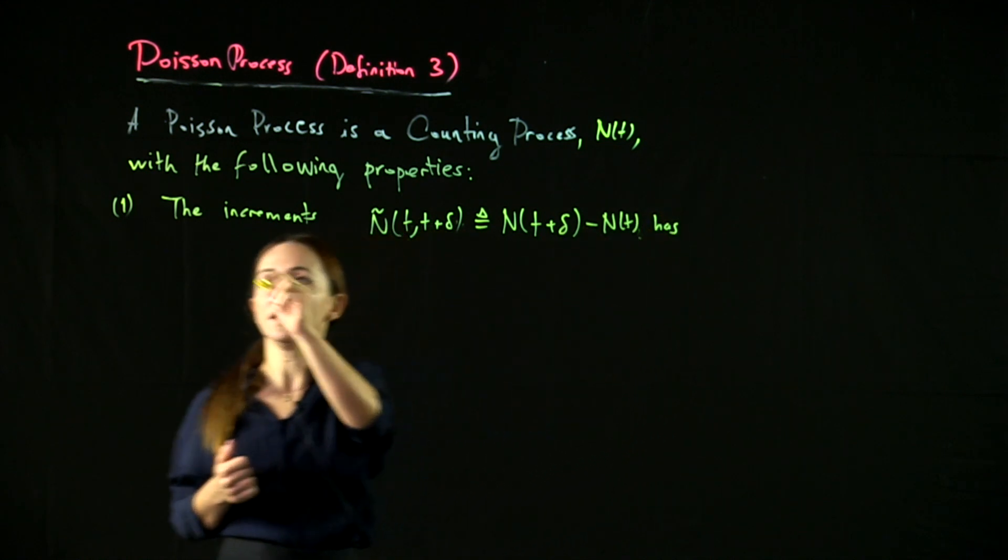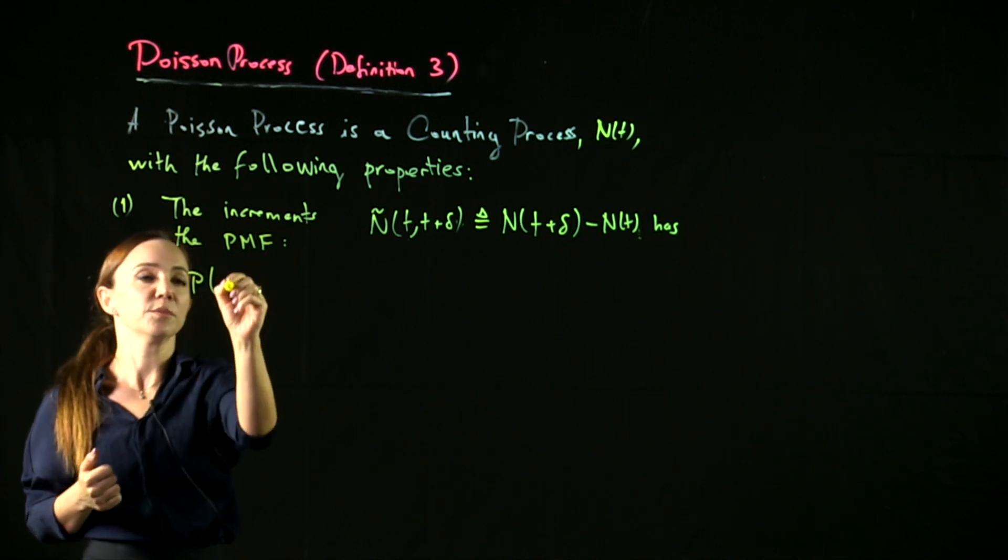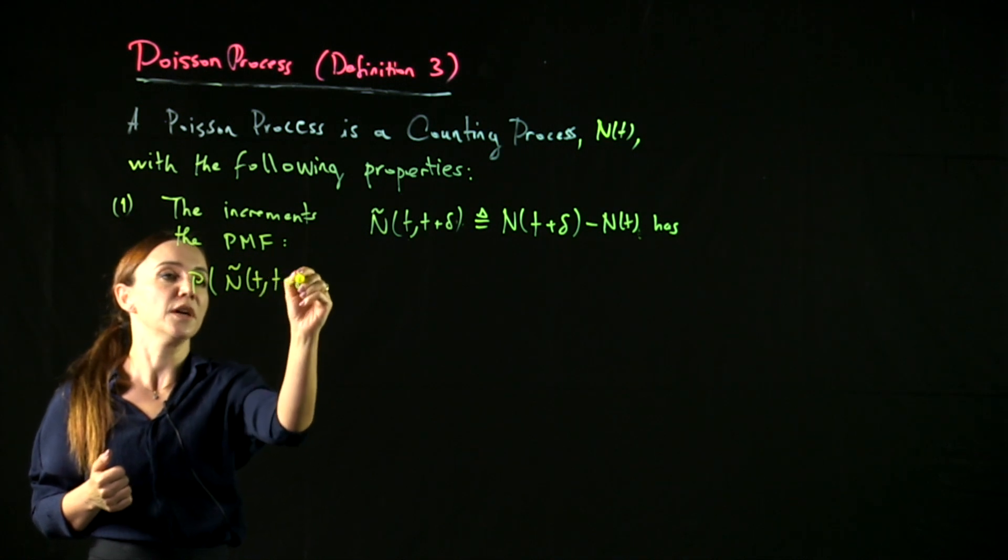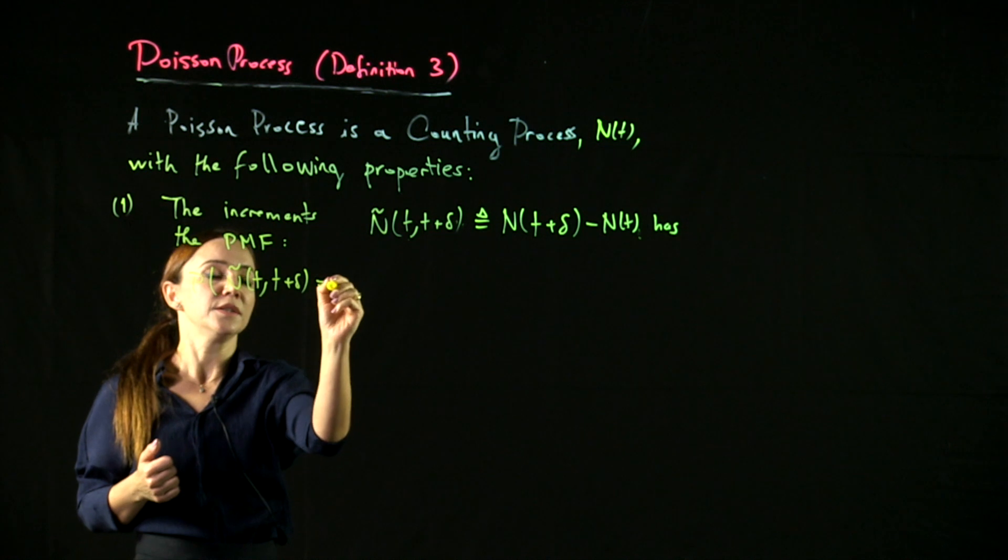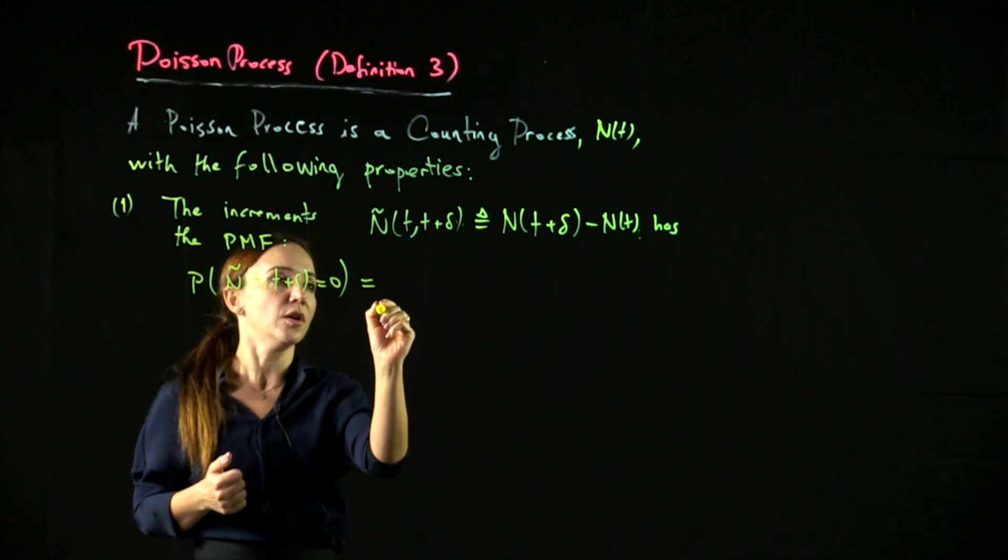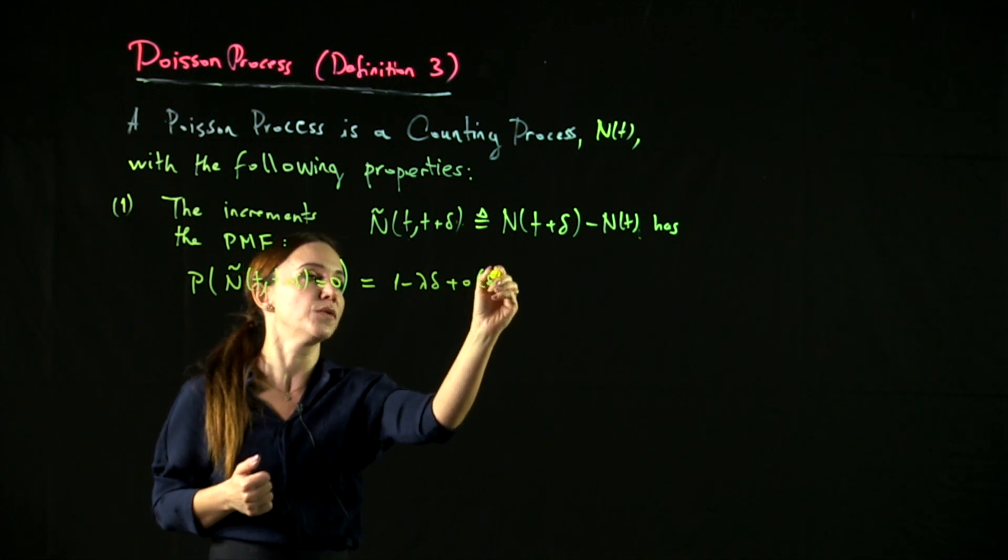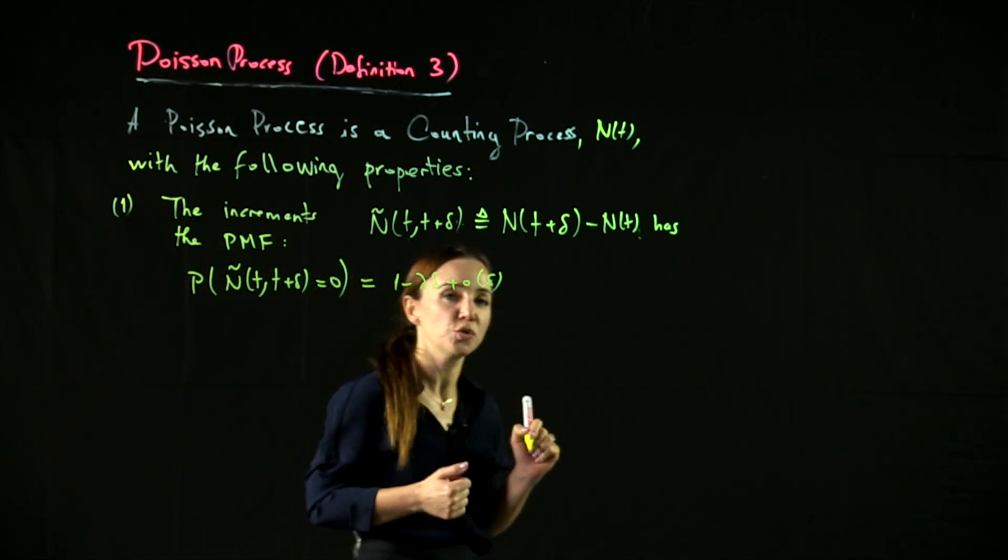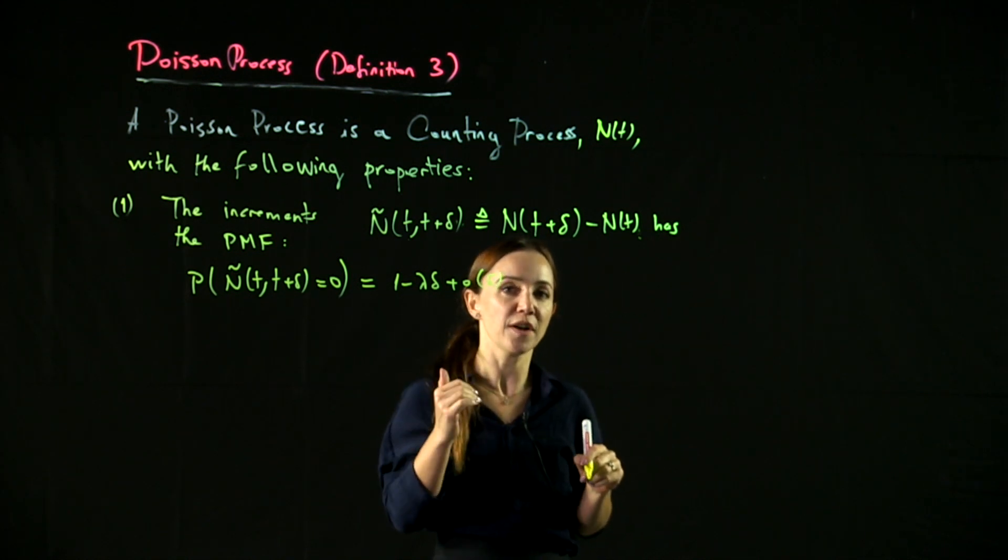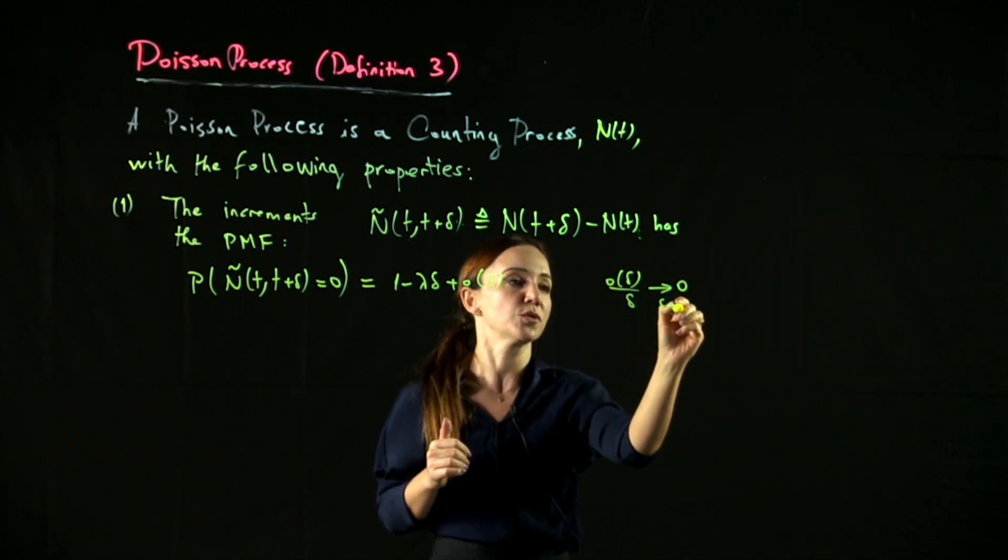has the probability mass function, which is given by the probability that the increment from t to t plus delta is 0 is 1 minus lambda delta plus little o delta, where little o delta should be understood as a function of delta that goes down to zero faster than delta, meaning little o delta divided by delta goes to zero as delta goes to zero.